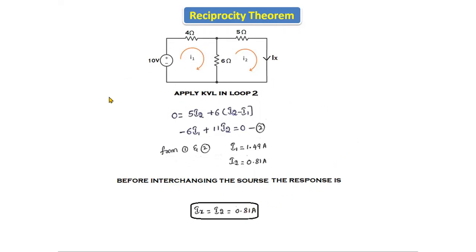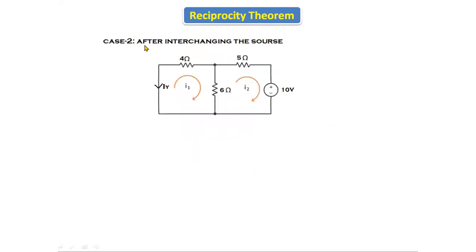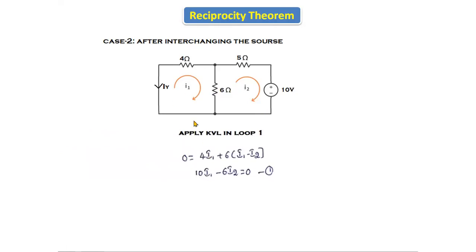Now we will see how the response changes after interchanging the source. After interchanging the source from here to here, we observe the response in the other branch. Loop one and loop two are both still in the clockwise direction, with I1 and I2 respectively. Applying KVL in loop one — there is no source in loop one — we get: 10·I1 minus 6·I2 equals 0. That is equation number one.